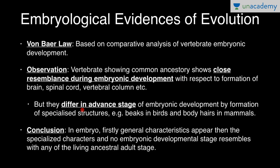But they differ in advanced stages of embryonic development by formation of specialized structures — for example, beaks in birds and body hairs in mammals. Von Baer concluded that in embryos, general characters appear first, followed by specialized characters, and no embryonic developmental stage completely resembles any of the living ancestral adult stages.